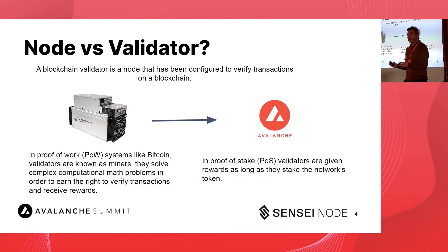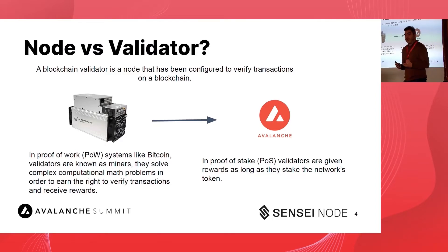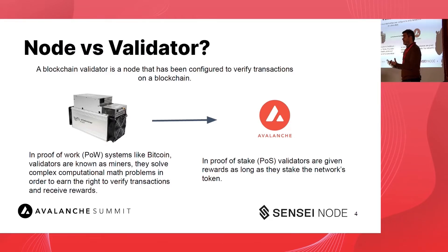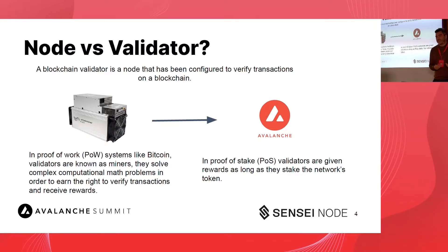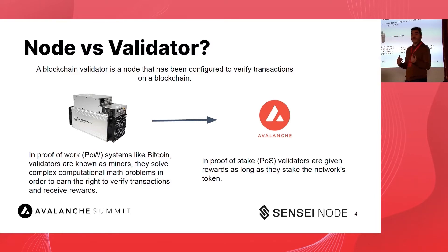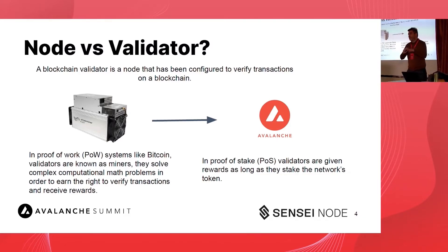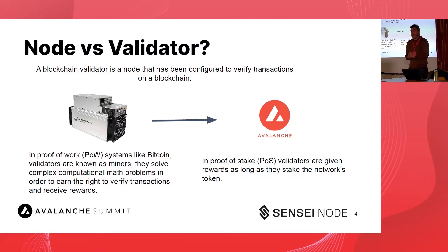Taking it back to Satoshi Nakamoto and Bitcoin's proof-of-work: in that world, miners consume a lot of energy because they need to verify transactions and receive rewards. They're given a mathematical problem and need to solve it to win the right to verify those transactions and earn rewards. This is the beautiful intersection of technology and economics — it creates a theoretical floor price for producing a Bitcoin, because you consume electricity and computational power and need to buy machines.